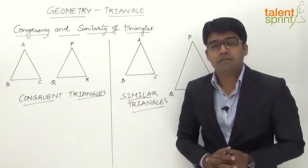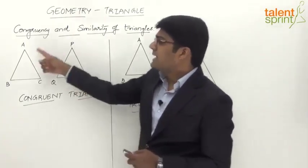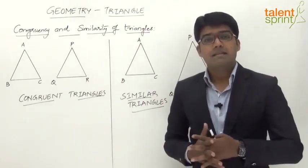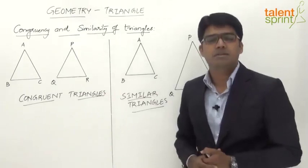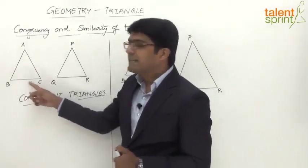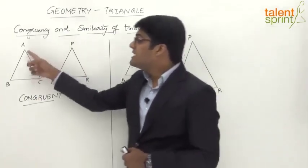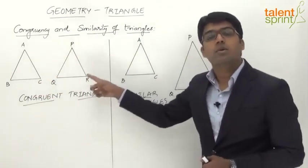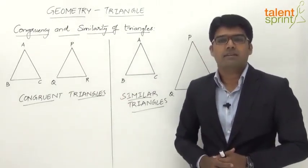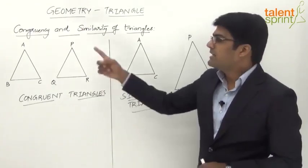Let us look at congruent triangles. We have two triangles ABC and PQR. The two triangles appear to be the same in shape and also in size. The angles of triangle ABC will be equal to the corresponding angles of triangle PQR, and the sides of triangle ABC will be equal to the corresponding sides of triangle PQR. Such triangles are known as congruent triangles.